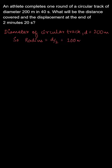Let us write the solution for this. As we have been given, the diameter of the circular track is 200 meters, so its radius will be half of that, that will be 100 meters.